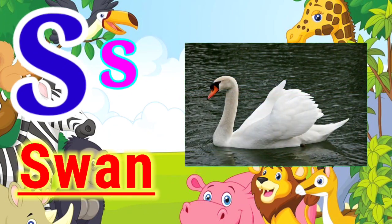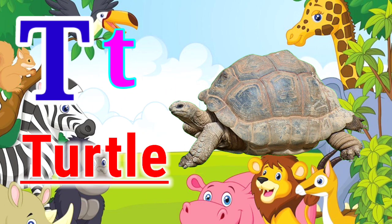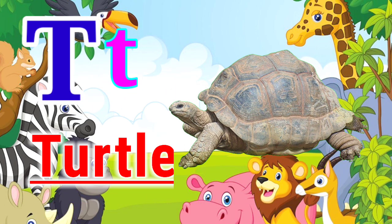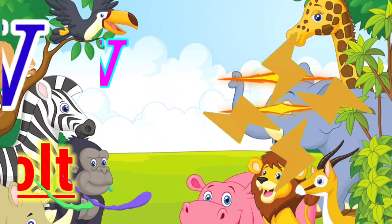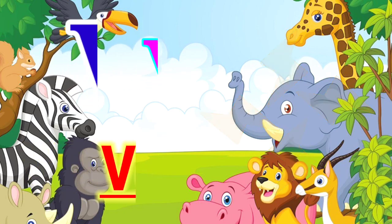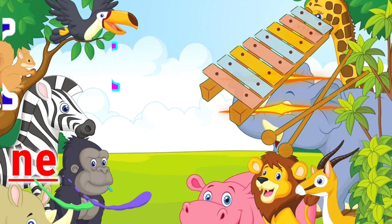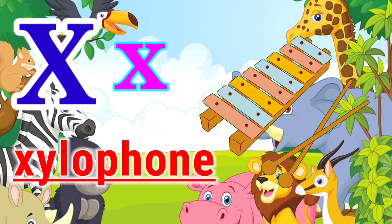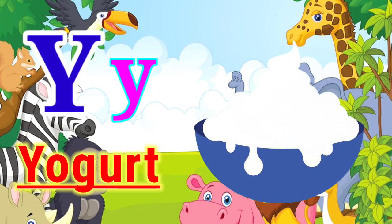S for sun. T for turtle. U for unique. V for vault. W for wind. X for xylophone. Y for yoghurt. Z for zoo.